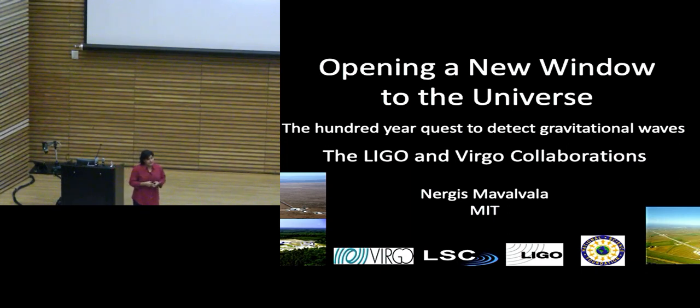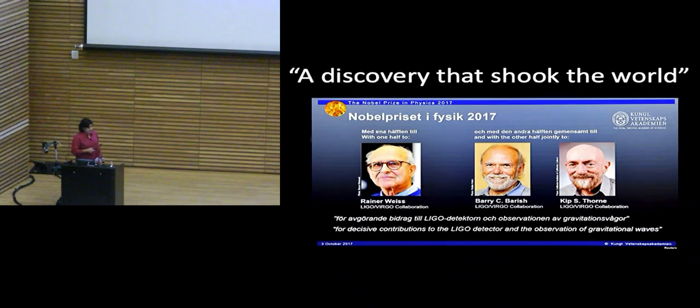I want to up front tell you that everything I'm going to talk to you about today, whether it's data, instruments, theory, is the work of literally hundreds of scientists who are the members of the LIGO and Virgo collaborations that have put together all the effort that was needed to make this discovery. It's a discovery that shook the world. This is what the Nobel Committee called it when awarding last year's Nobel Prize in Physics to these three gentlemen, Ray Weiss on the left from MIT, and Kip Thorne and Barry Barish from Caltech.